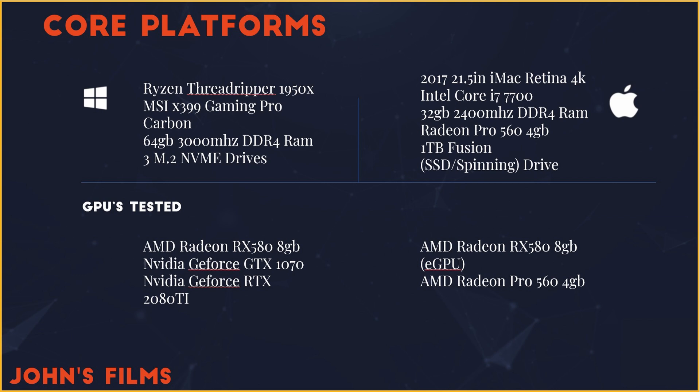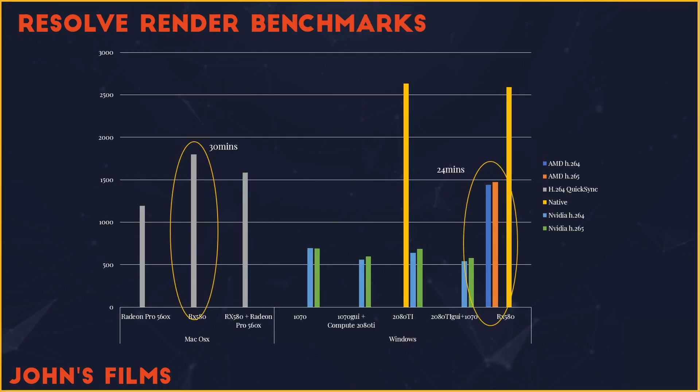On the bottom half, you see the GPUs that I tested. In Windows, I tested an RX 580 from AMD and two NVIDIA cards — a GTX 1070 and an RTX 2080 Ti. Over on the Apple side, I was able to test a Radeon RX 580 through an external GPU enclosure, and a Radeon Pro 560 4GB. The astute individuals have already identified that we ran the RX 580 on both platforms.